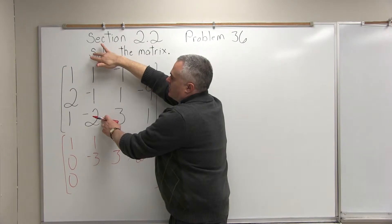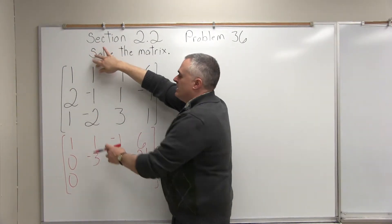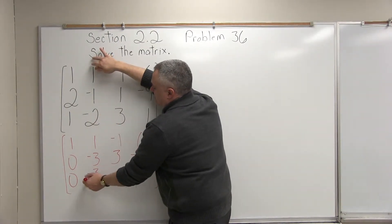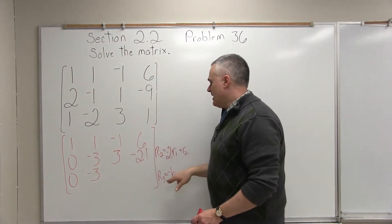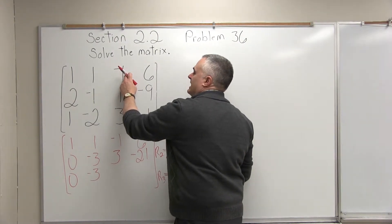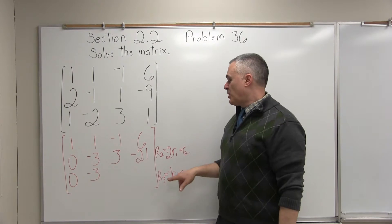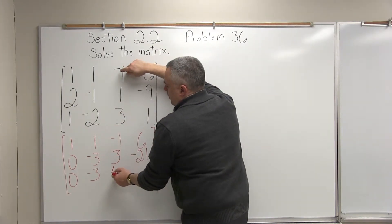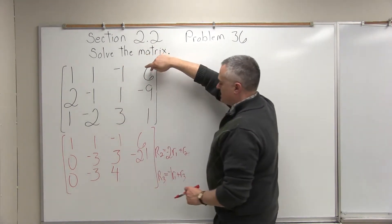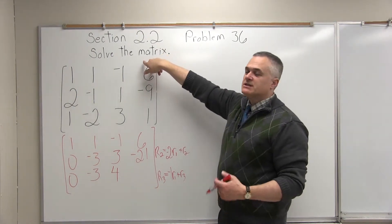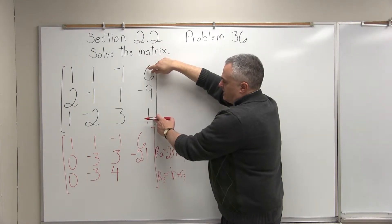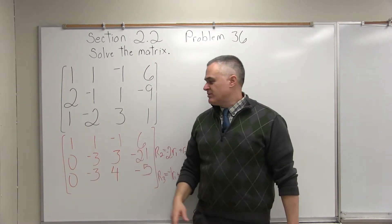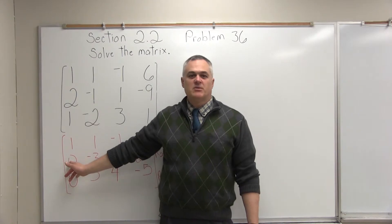Negative 1 times row 1: next column, negative 1 times 1 is negative 1; add to row 3's negative 2 gives negative 3. Next position: negative 1 times negative 1 — negatives cancel — gives positive 1; positive 1 plus positive 3 is 4. Last position: negative 1 times 6 is negative 6; negative 6 plus positive 1 is negative 5. So step 2 is complete — I've zeroed out the other values in that first column.